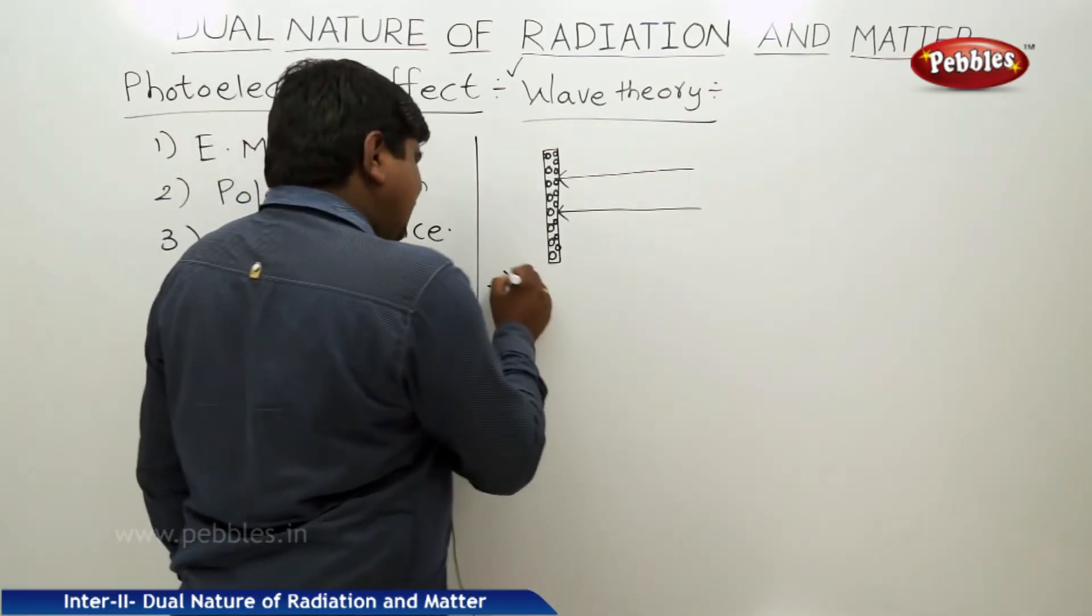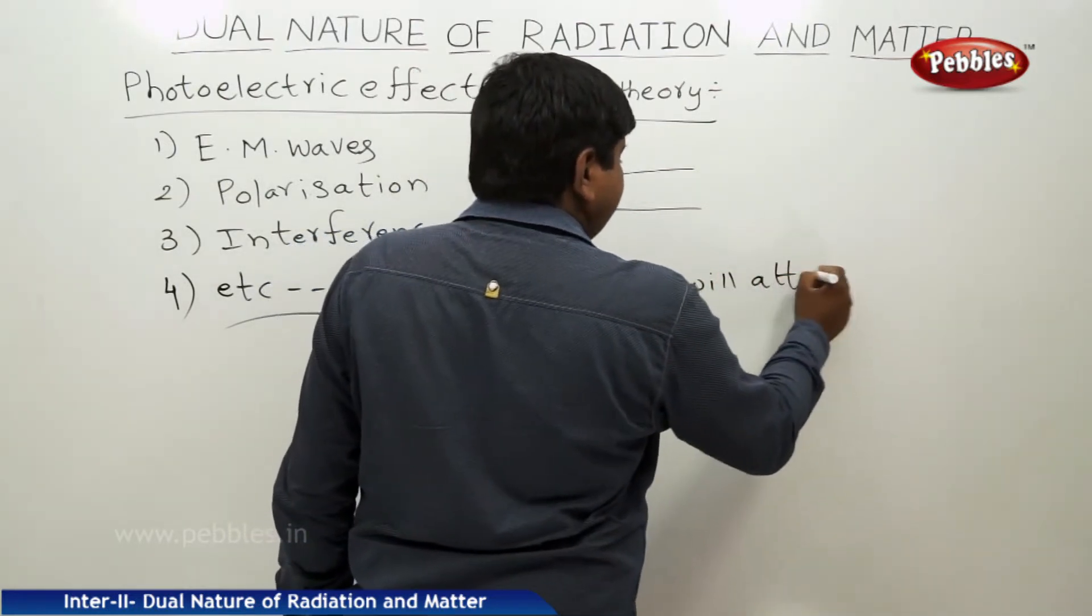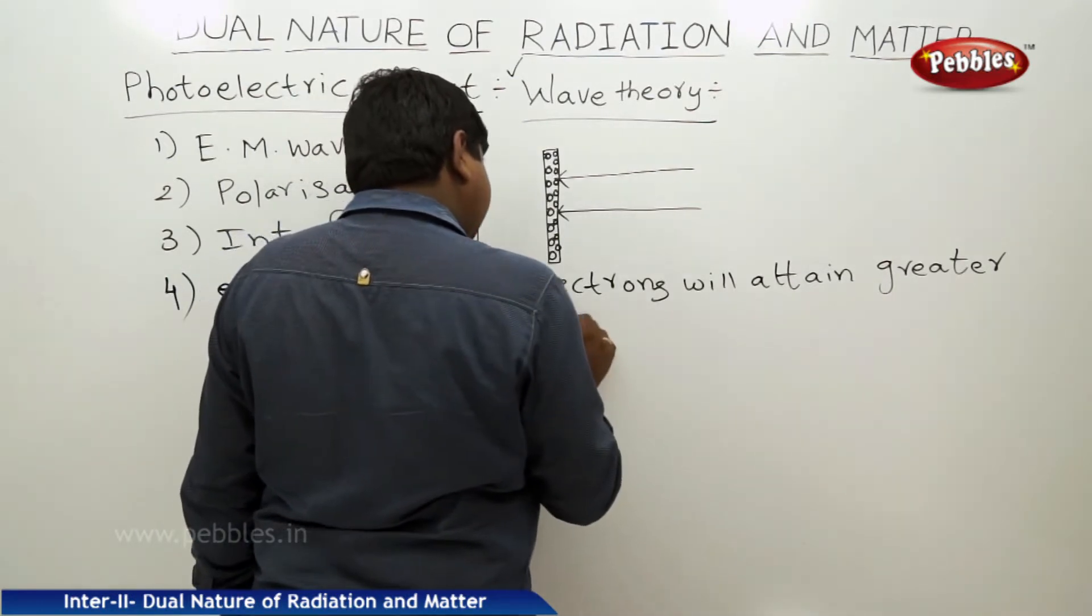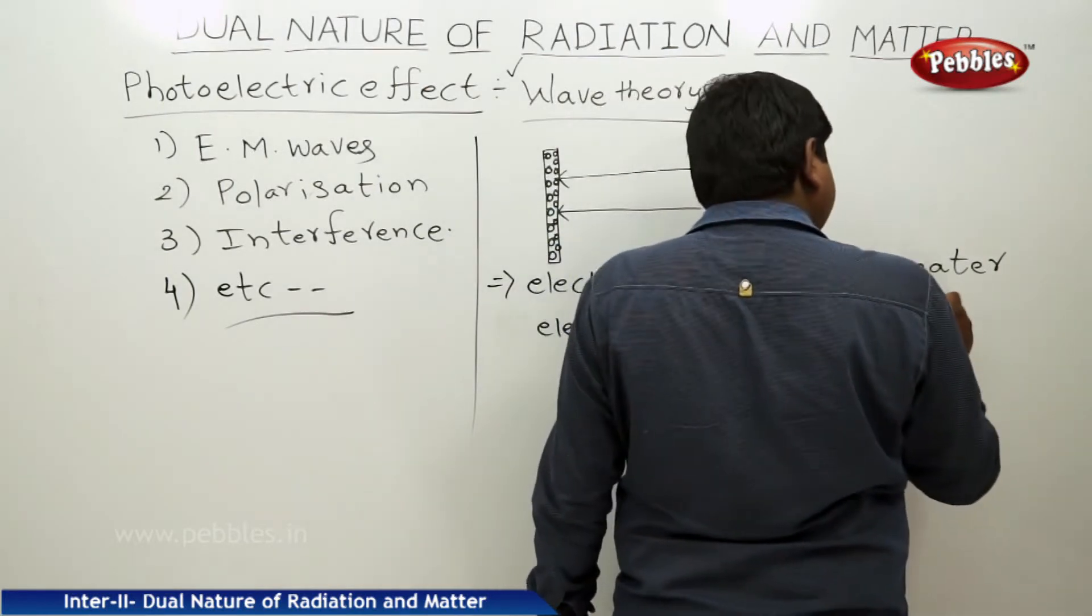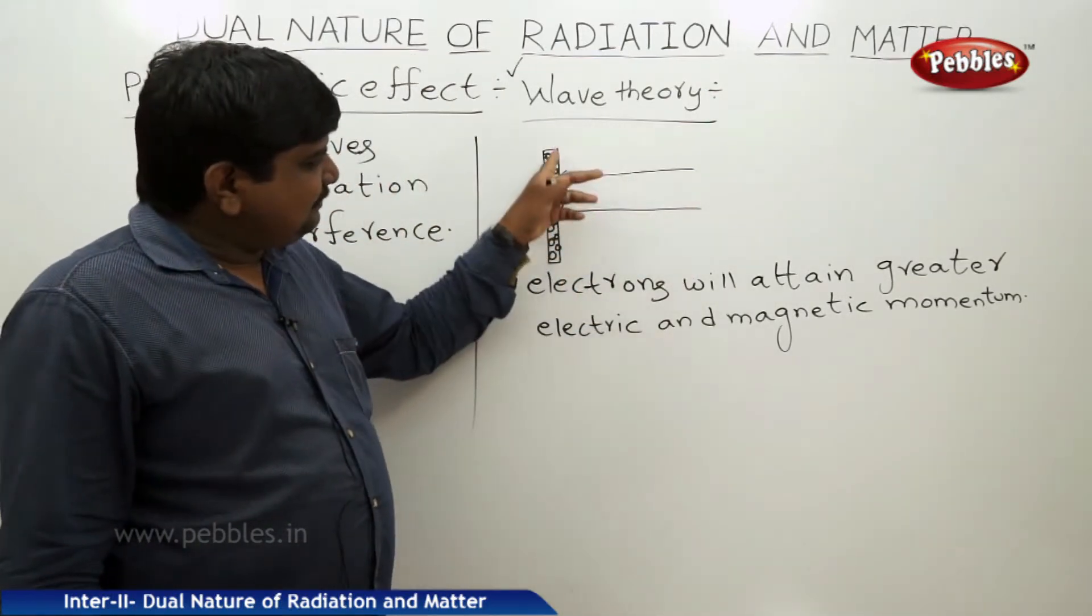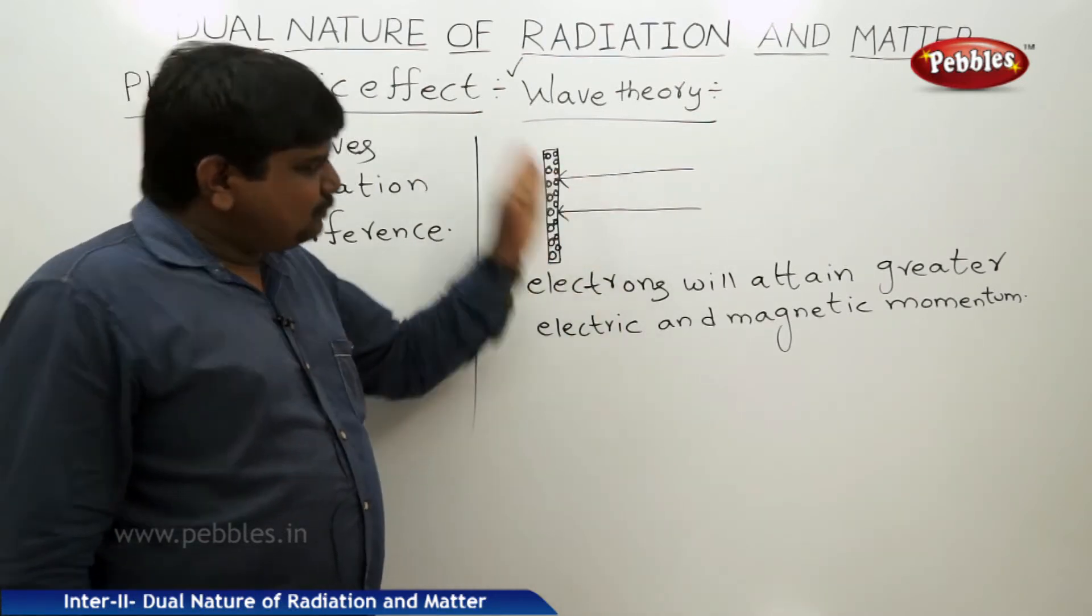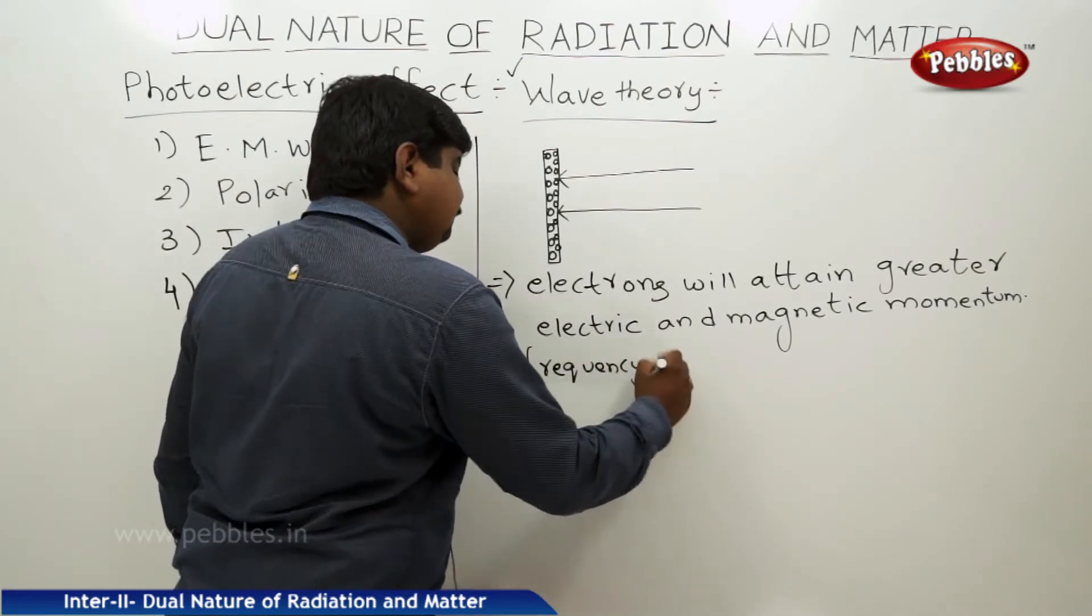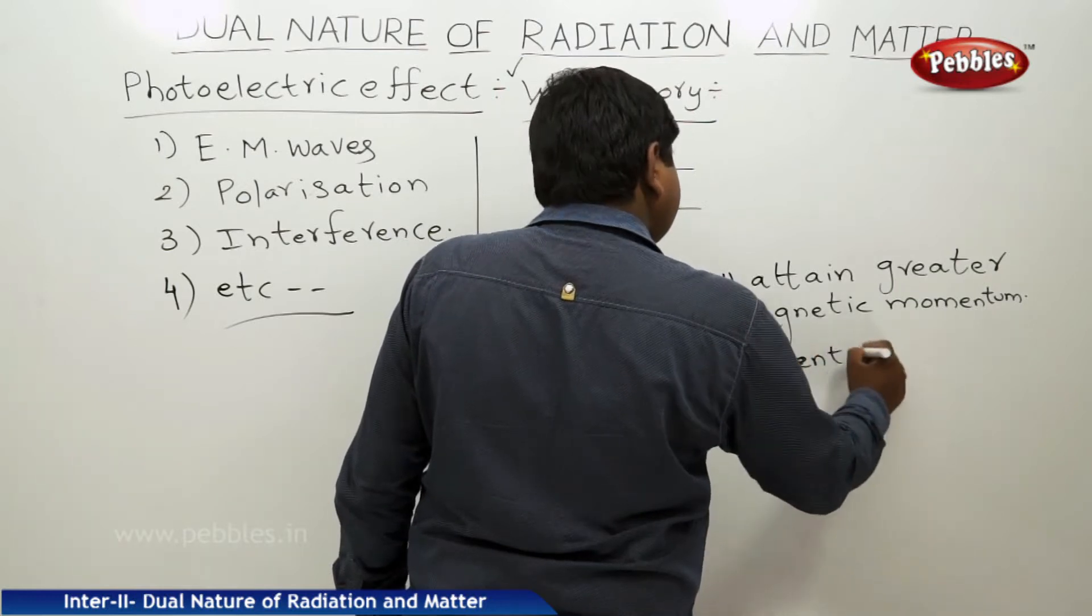At the same time, because of that, electrons will attain greater electric and magnetic momentum. So intensity was increased and continuously increased, and that intensity falls on the metal surface. The electrons which were near to the metal surface, the first layer or which are close to the top surface of the metal, they will absorb the energy first, whatever may be the frequency. So frequency is independent of matter.